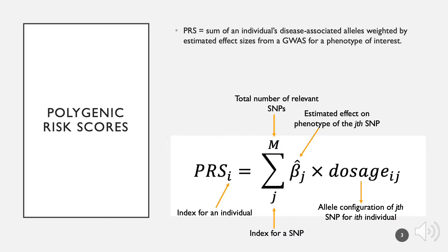PRS are the sum of an individual's disease-associated alleles weighted by estimated effect sizes from a GWAS for a particular phenotype of interest. The equation for calculation is shown on the screen, where i and j are indices for individuals and SNPs respectively. Beta-hat represents the estimated effect size of the j-th SNP on the phenotype, and the dosage is the number of risk alleles the individual has for the SNP. My research group used PRSice2 software to calculate our scores.